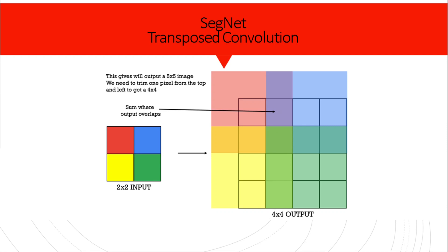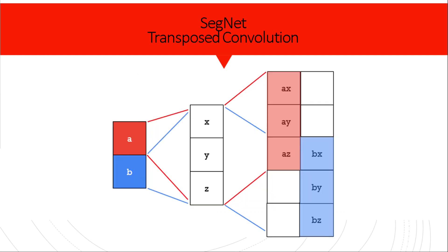For a 1D transposed convolution, the process is similar. Assume an input signal with two elements a and b and a filter of length 3: x, y, z. We multiply to get ax, ay, az, and bx, by, bz, with a stride of two in the output. Overlapping positions such as az and bx are summed together. That's how a 1D transposed convolution works.